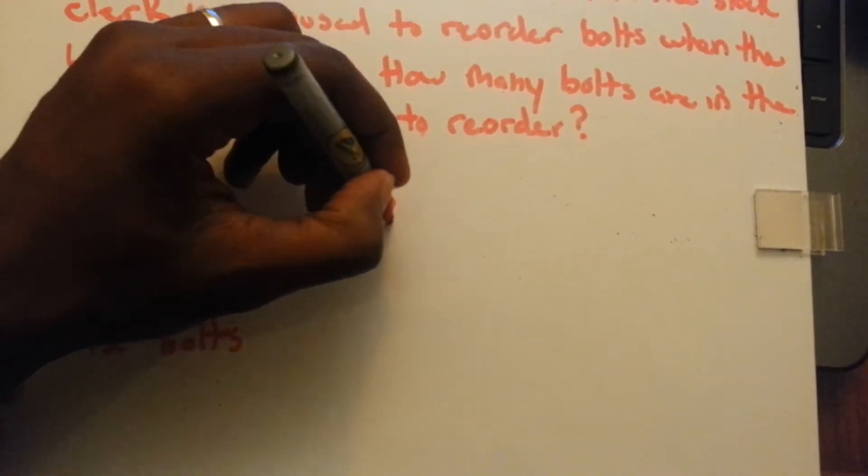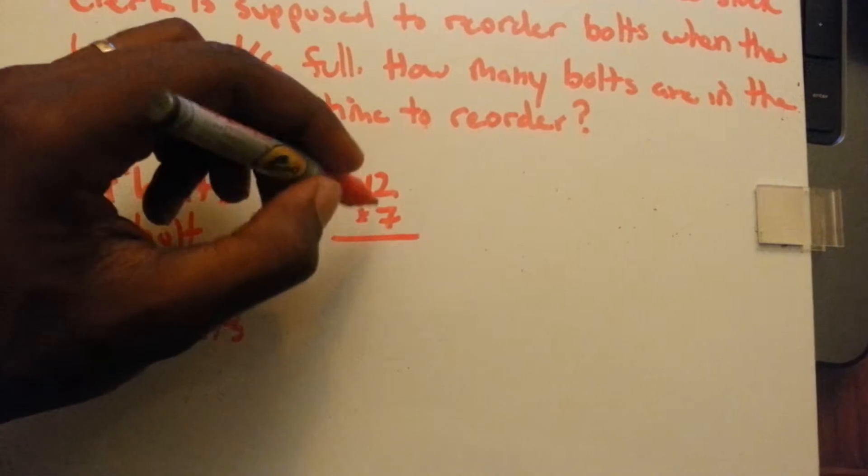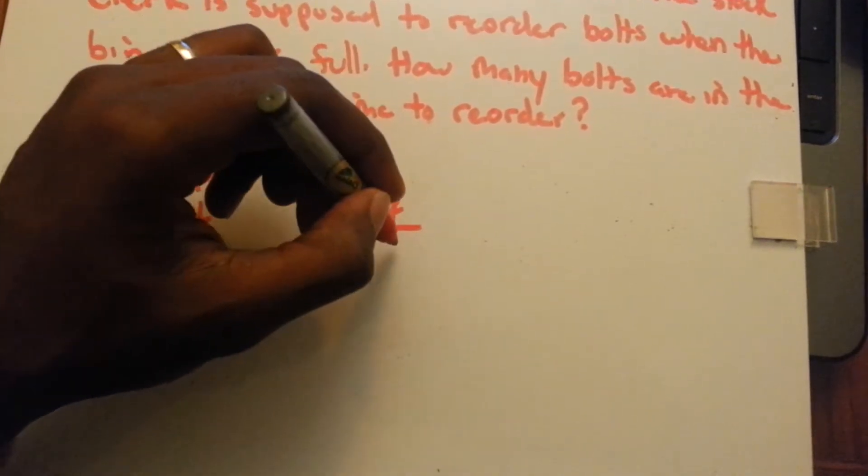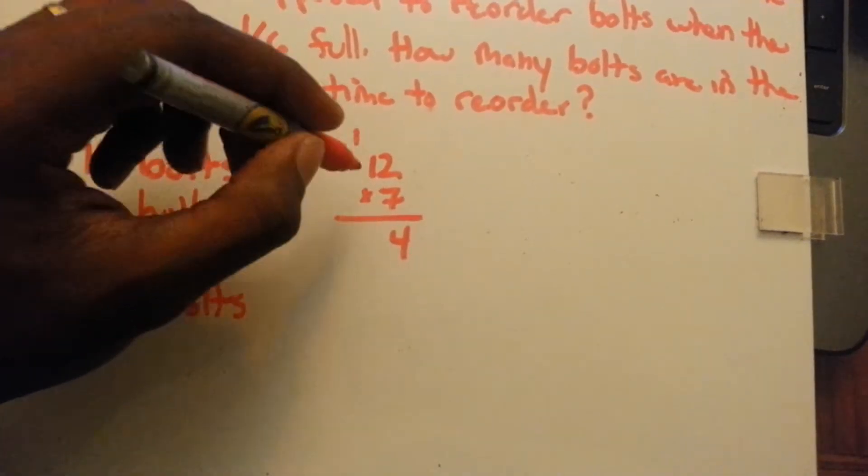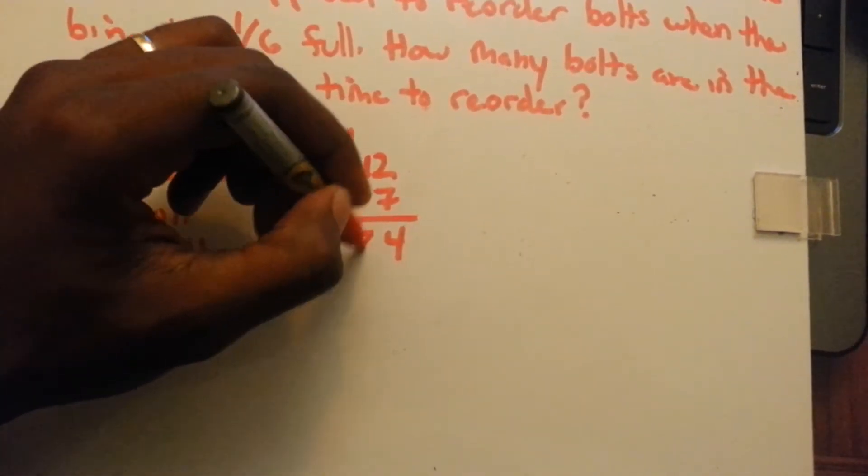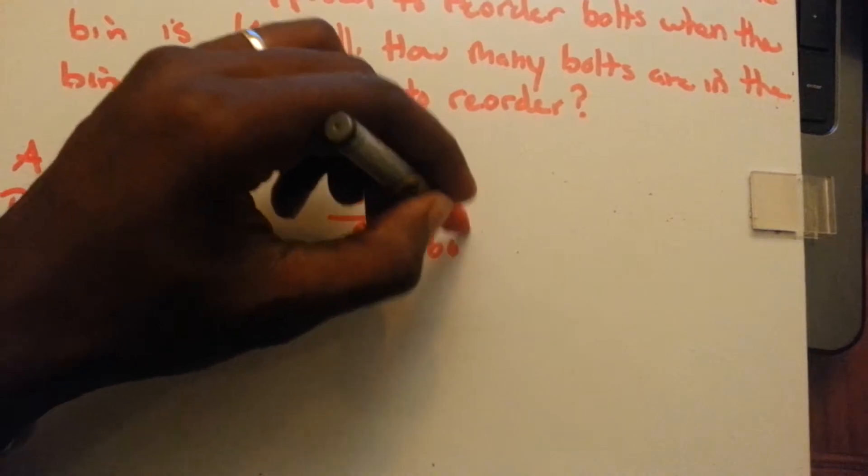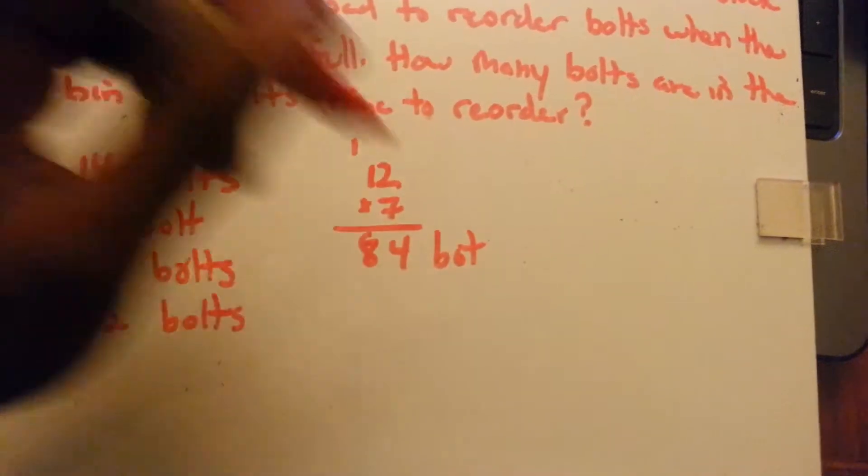So, twelve times seven equals... seven times two is fourteen, seven times one is seven, plus one is eighty-four. So, there's eighty-four bolts when the bin is full.